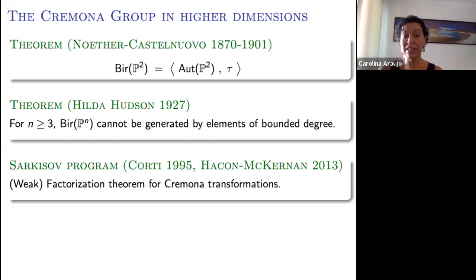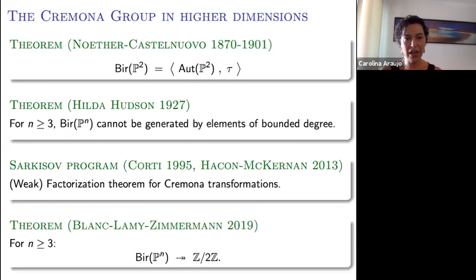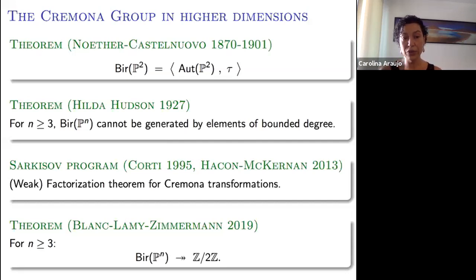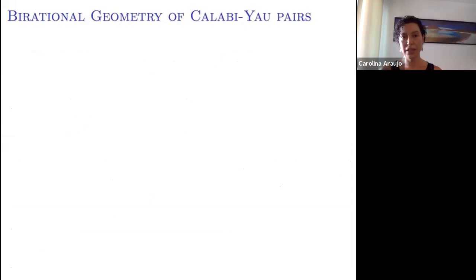The Sarkisov program is a very powerful tool for studying the Cremona group. For example, Blanc, Lamy, and Zimmermann proved in 2019 that for any n ≥ 3 one can construct several quotients of the Cremona group onto the cyclic group of order two, showing in particular that the Cremona group is not simple. Their proof relies on a deep understanding of the Sarkisov factorization for P^n.